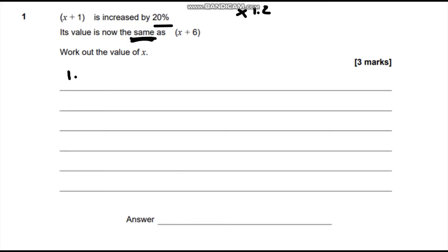So we're going to have 1.2 multiplied by x plus 1 equals x plus 6, because this being increased by 20% and x plus 6 have to be the same.